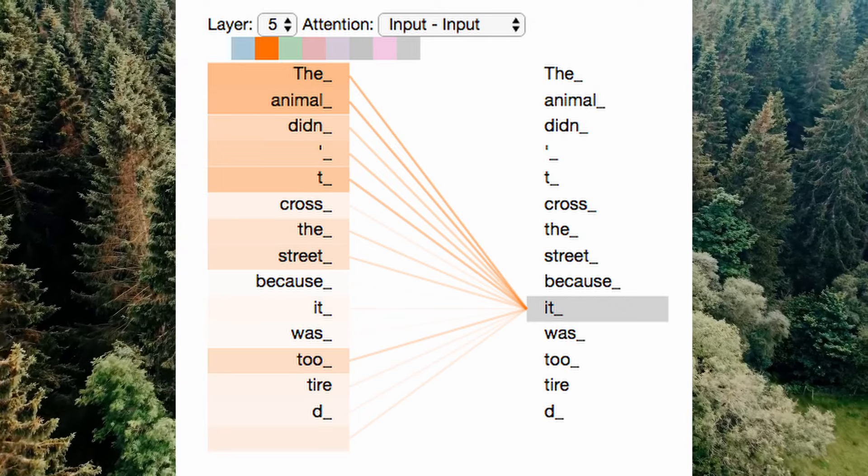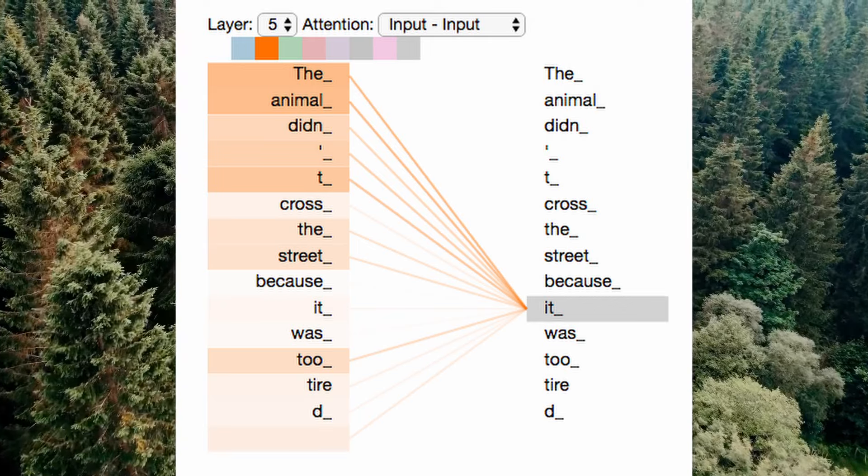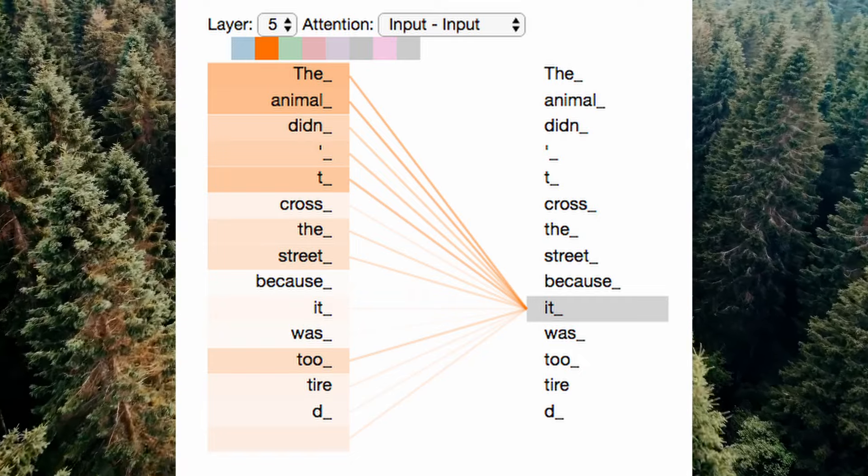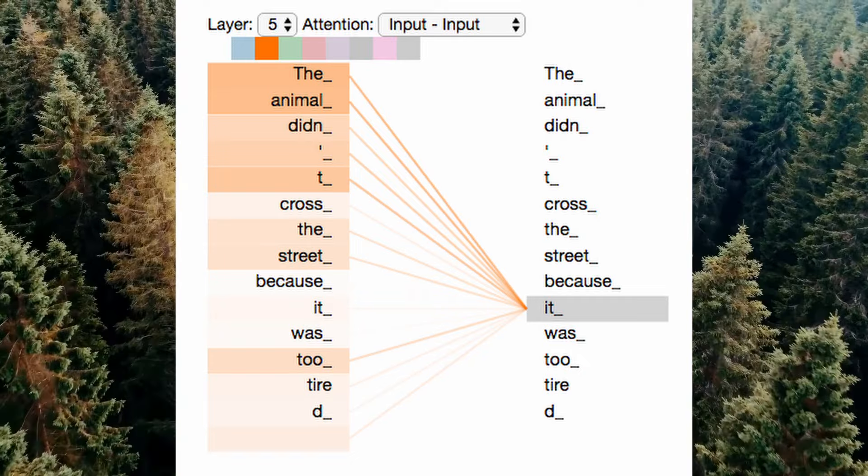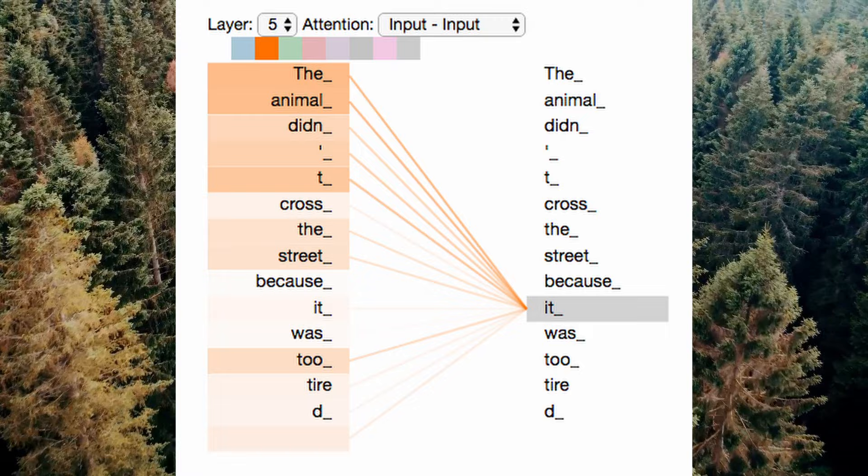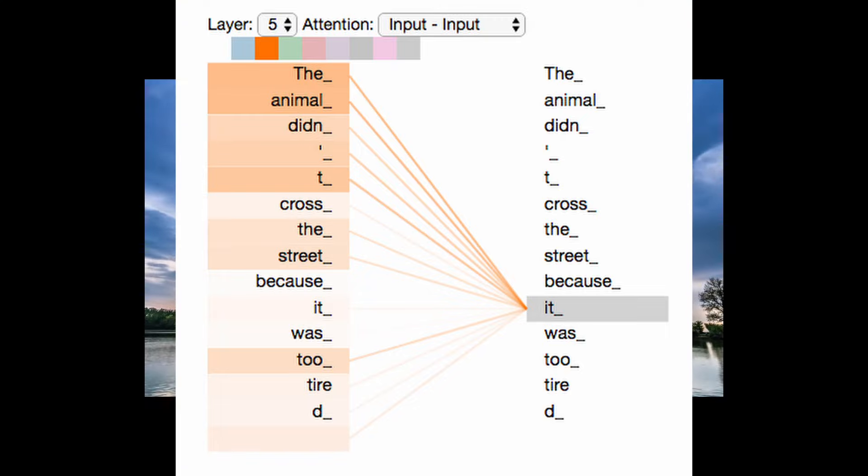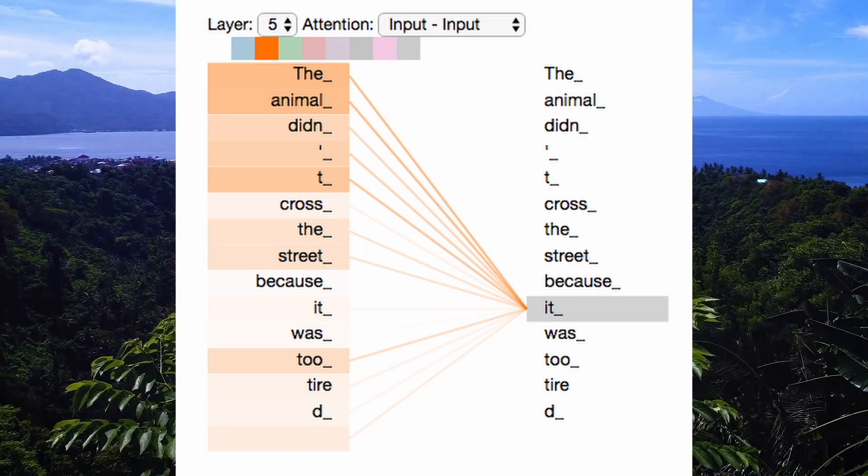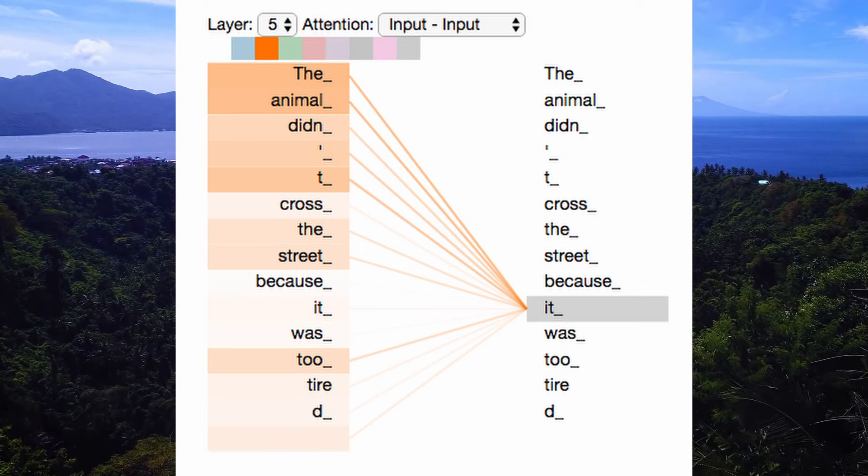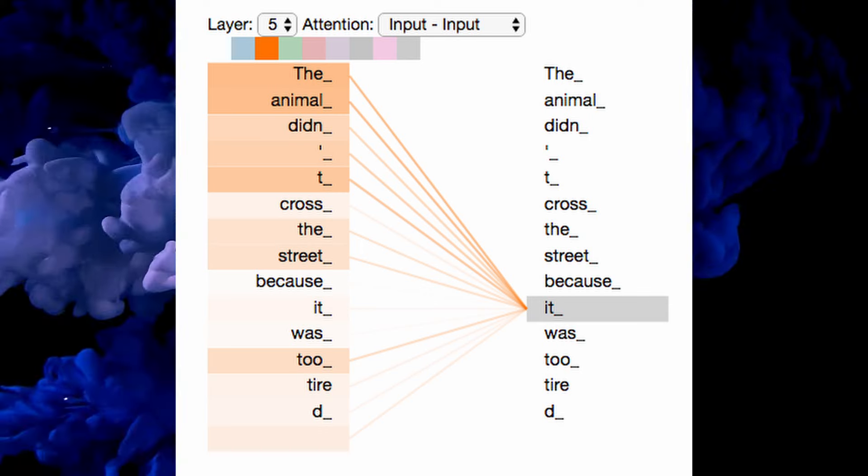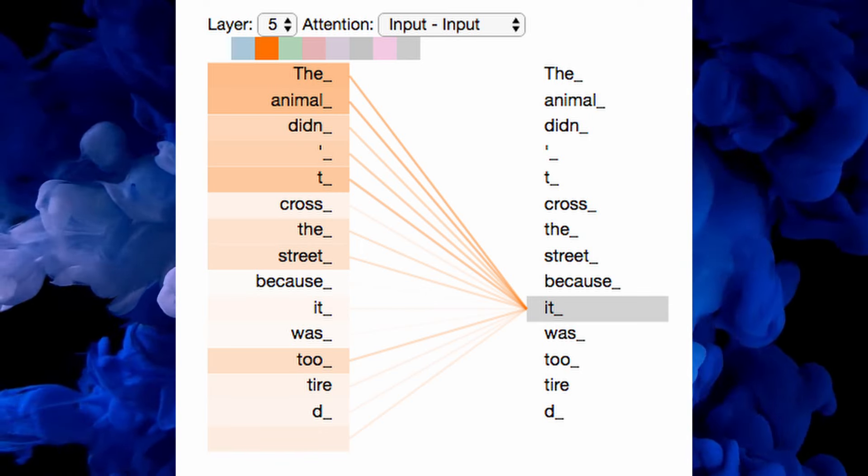Additionally, residual connections in transformers further alleviate the vanishing gradient problem. These connections ensure that the gradient can flow unimpeded through the network, bypassing certain layers if necessary. It's also important to note that normalization techniques like layer normalization employed in transformer models further stabilize the training process. Stable activations reduce the risk of gradients becoming too small or too large.